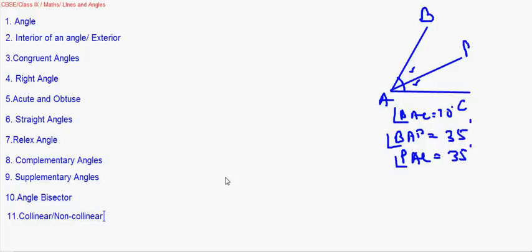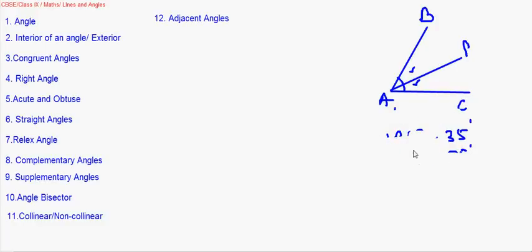We will also come across the linear pair of angles. But before getting into linear pair, let us take up adjacent angles. I'll use the same figure I used to explain the angle bisector to explain adjacent angles.